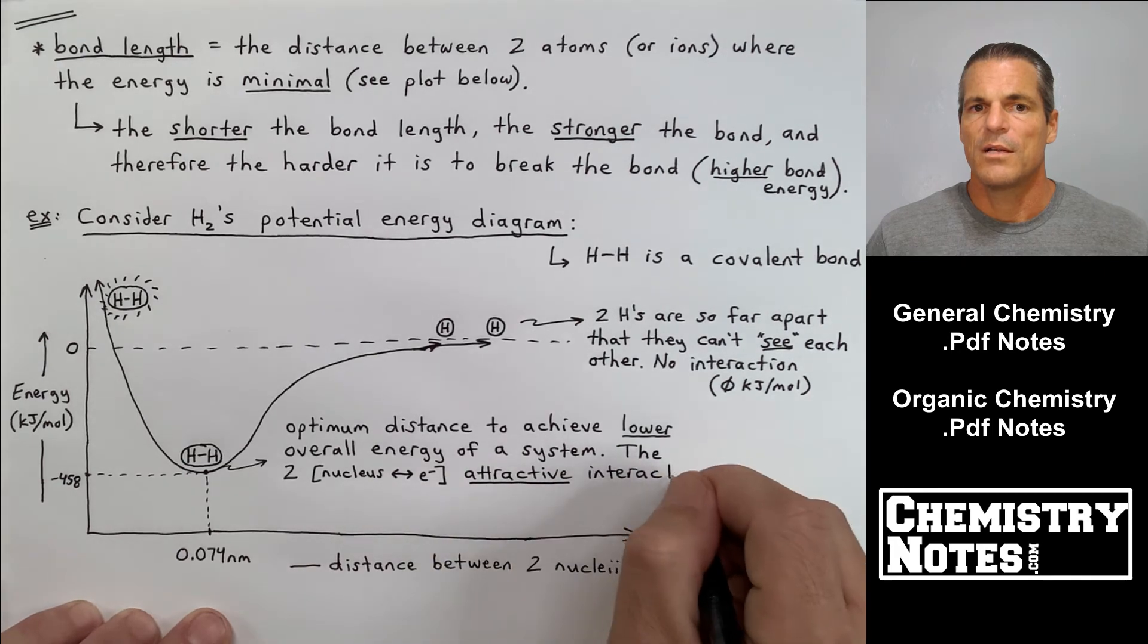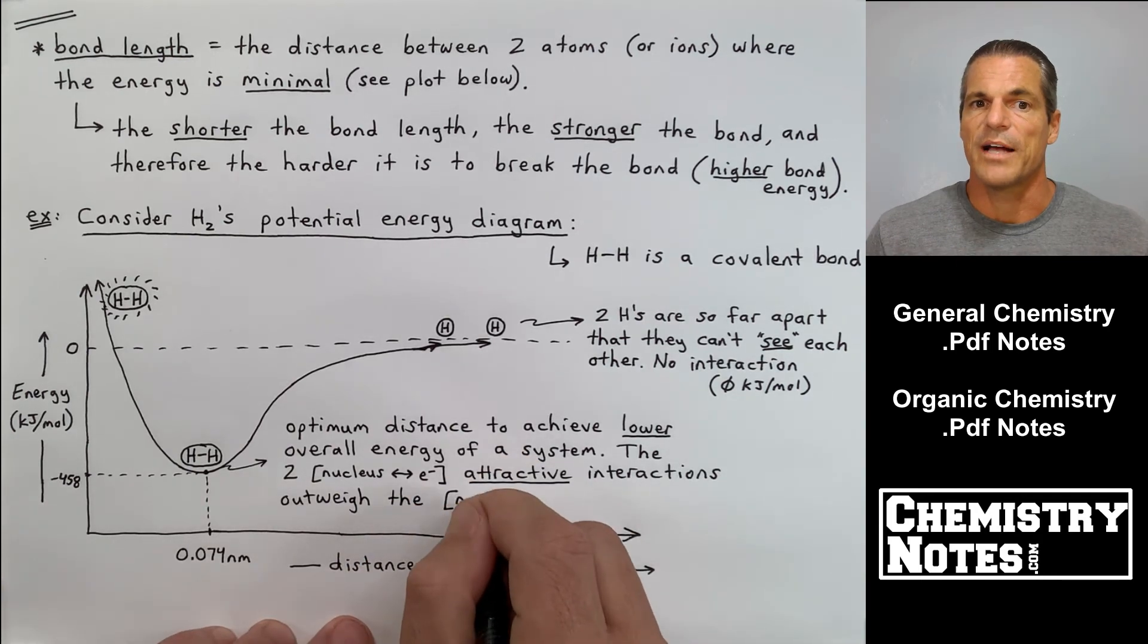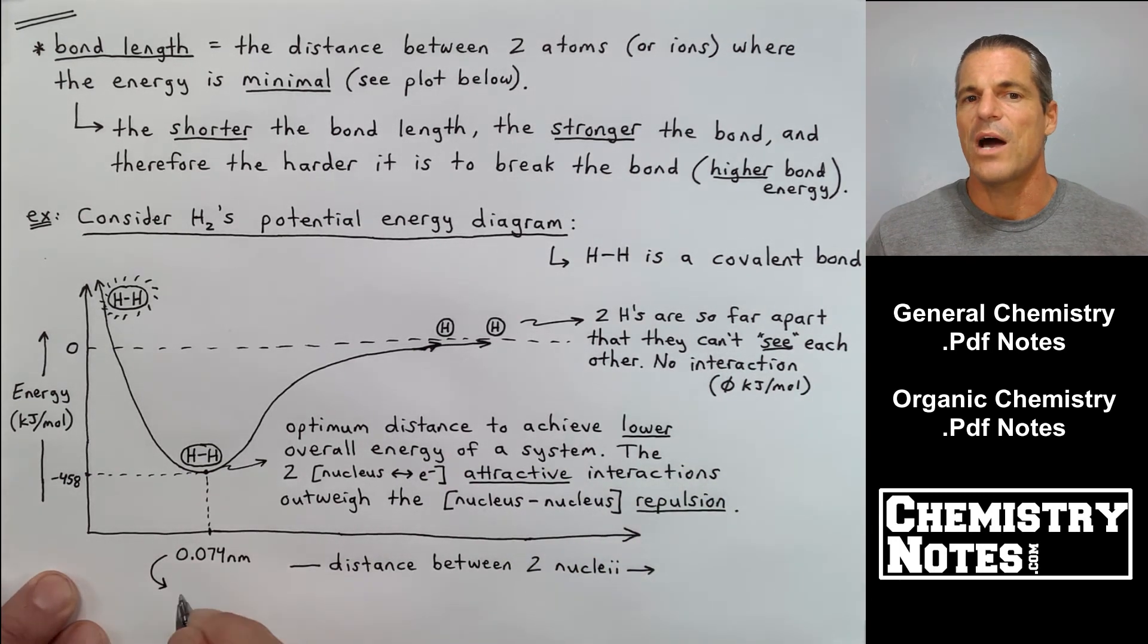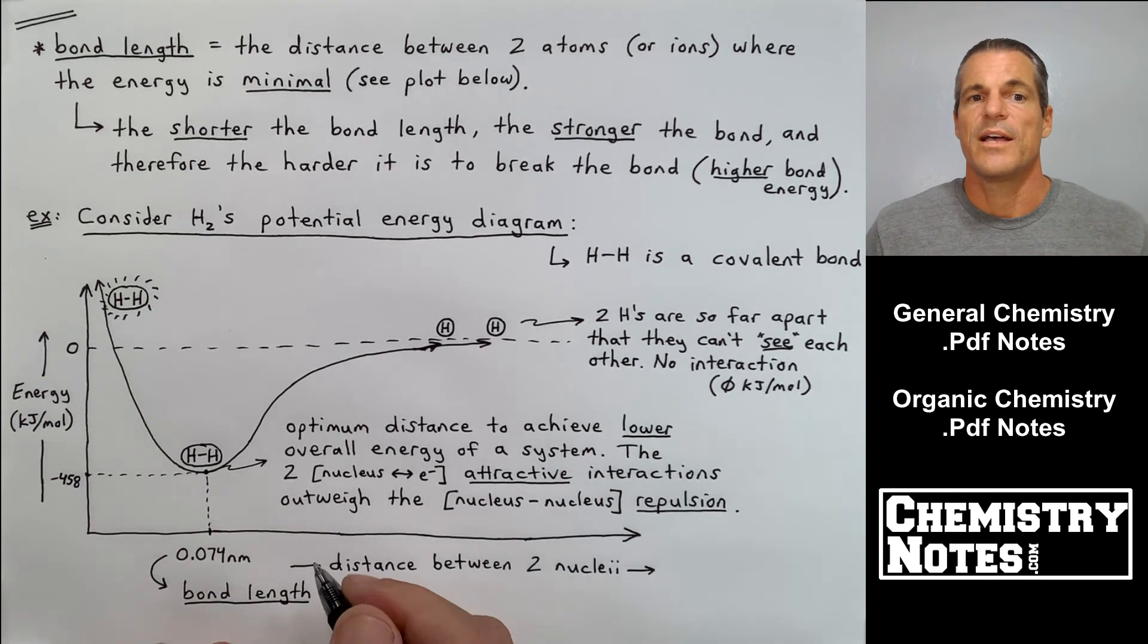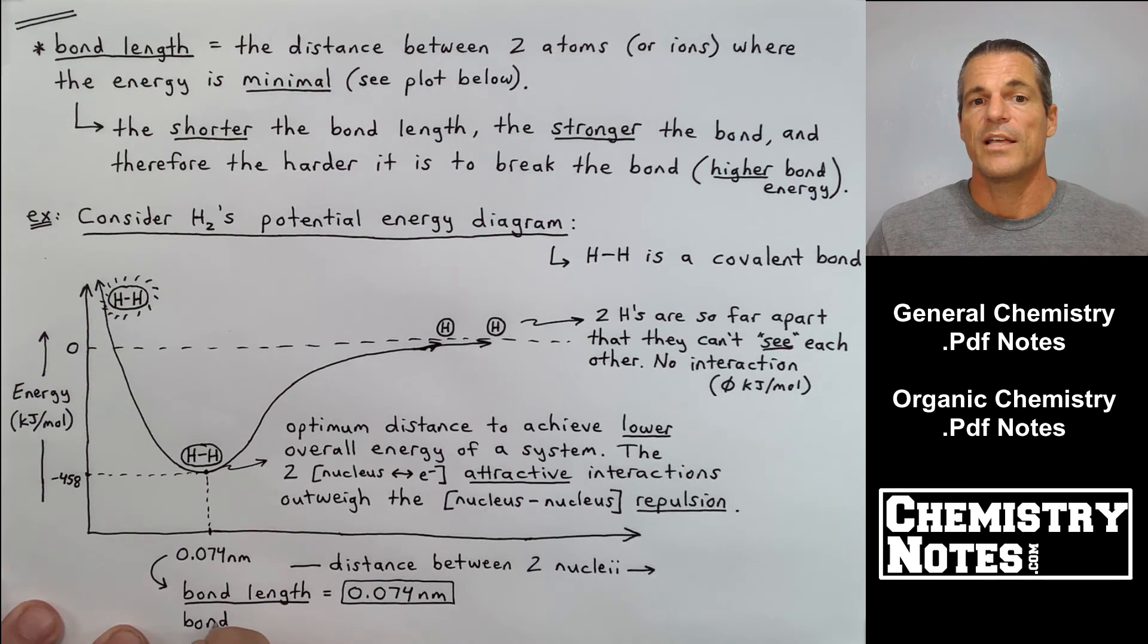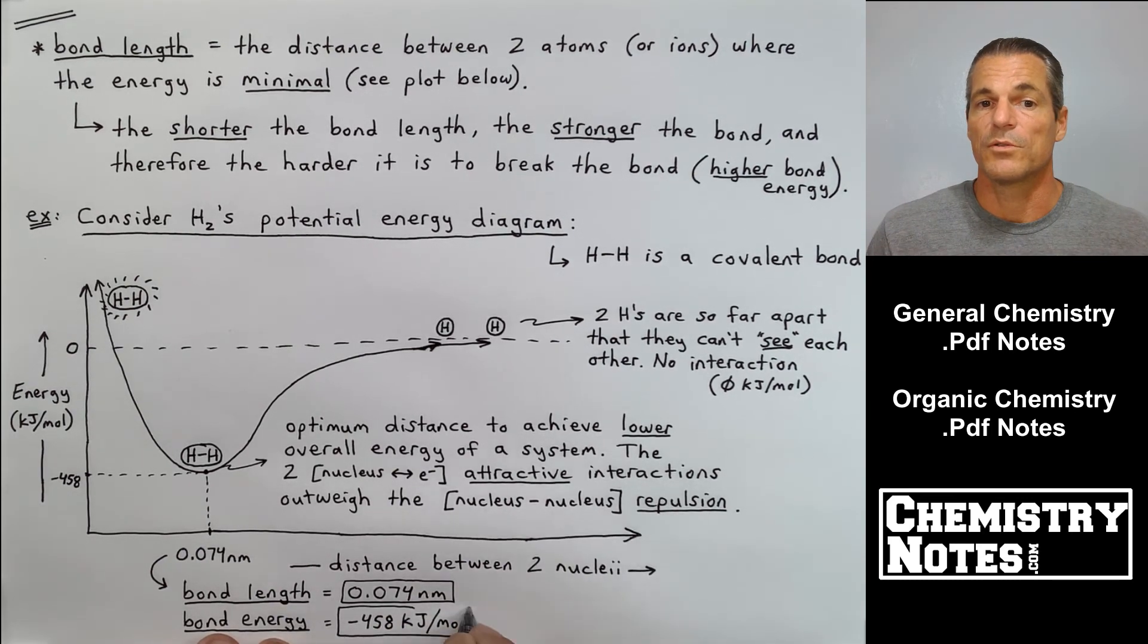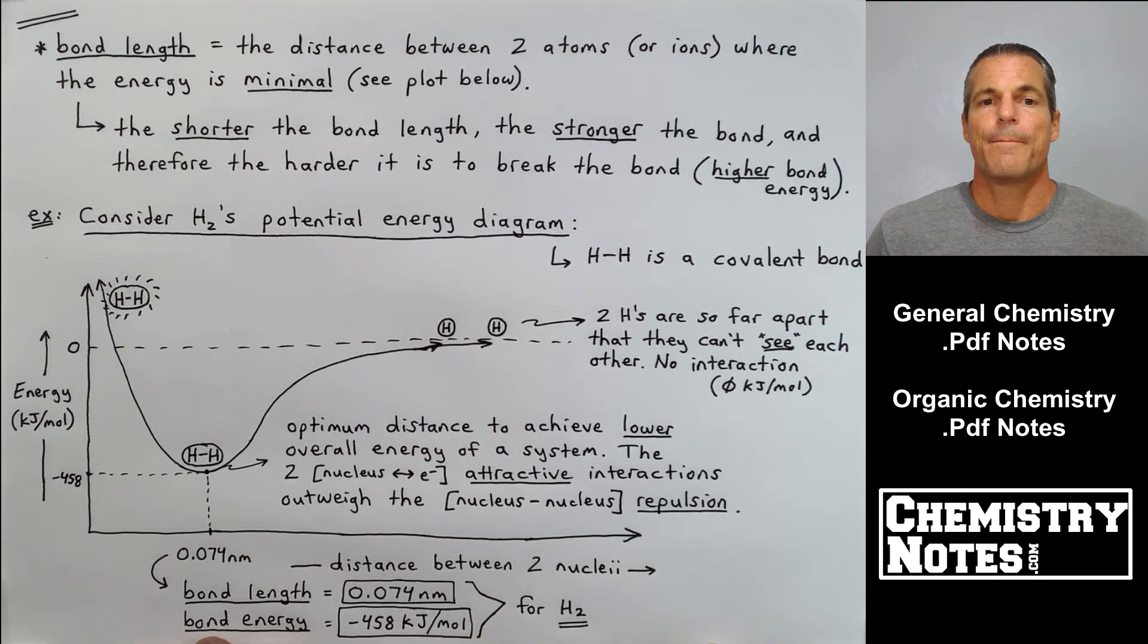There are a couple of things battling each other here. At this particular bond length, 0.074 nanometers, we have two good interactions—the attractive interactions between the nucleus, which is +1, and the electron. Those attractive forces outweigh the +1, +1 nucleus-nucleus repulsion when we're at this trough at -458 kilojoules per mole. The bond length is 0.074 nanometers and the bond energy equals -458 kilojoules per mole. That is the bottom of page 3.